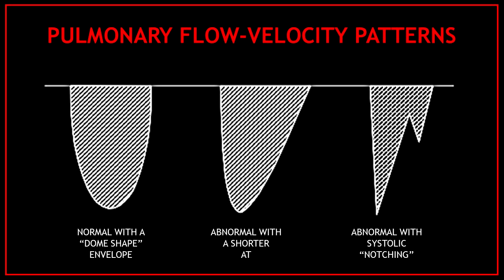Now let's learn how to recognize the patterns. The first pattern, from left to right, is the normal pattern — a very symmetrical pattern with a dome-shaped envelope. The second is an abnormal pattern with a shorter acceleration time due to increased right ventricular pressures. The third is also abnormal and shows how a systolic notch looks.